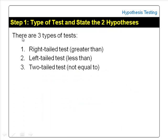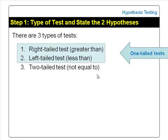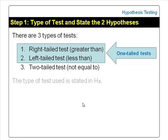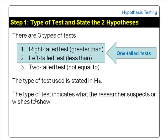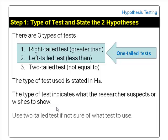There are three types of hypothesis tests: the right-tailed or greater than test, the left-tailed or less than test, and the two-tailed or not equal to test. The right and left-tailed are also called one-tailed tests. We specify the type of test in the alternate or research hypothesis. If you are not sure what type of test to do, then do a two-tailed test.